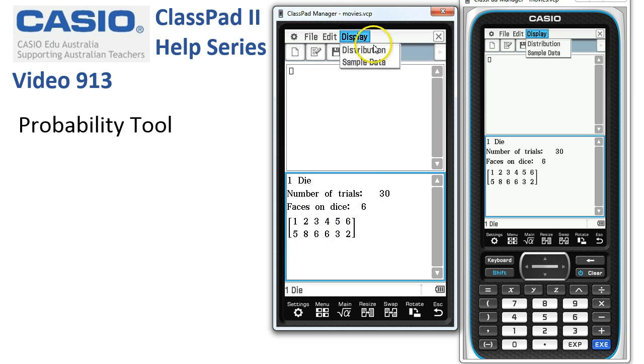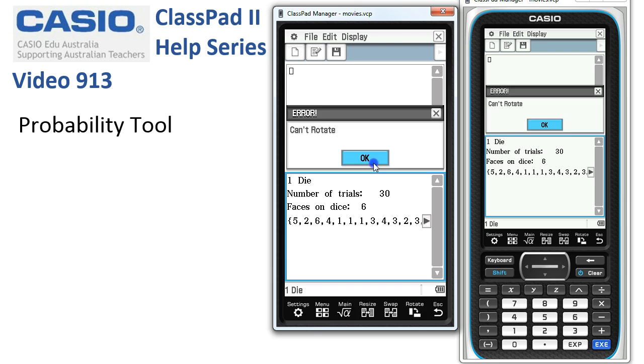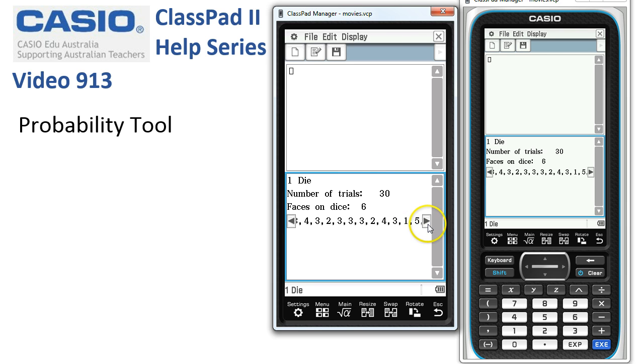If we tap onto display and sample data, then you can see here's the list of it. I'm not sure if I can rotate around in this view. No, it's not saying I can, but we can scroll over if we wanted to see the order in which those numbers were thrown.